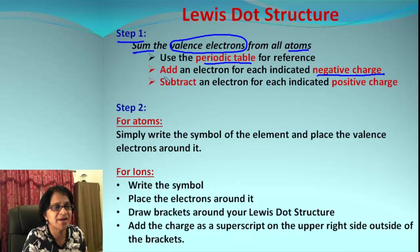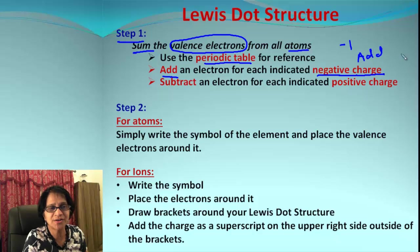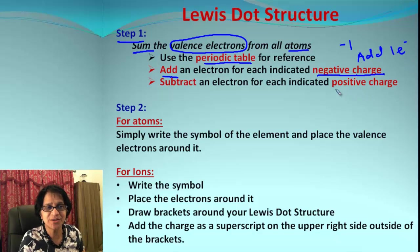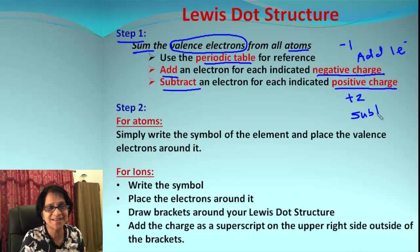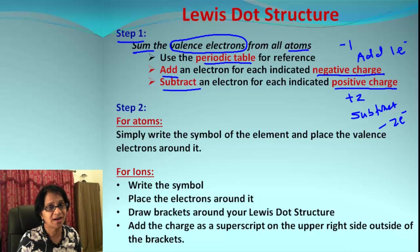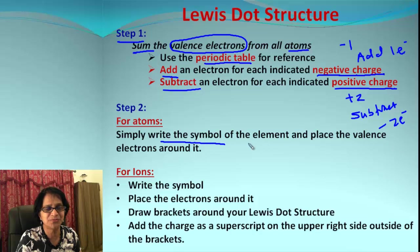If it is an ion with a negative charge, we are going to add an electron for every single charge. So if it is negative one as a charge, we add one electron. If it is a positive charge, then we subtract the electrons. So if you have a positive two charge on the ion, you subtract two electrons from the total number.